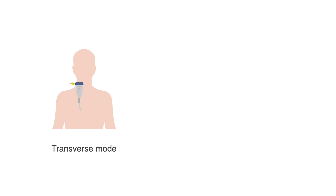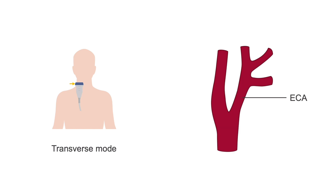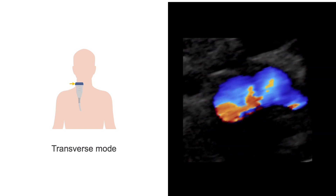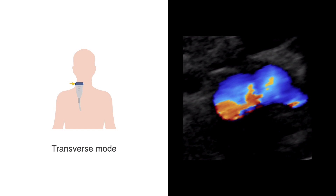To help identify these arteries, first look at the right side of the patient's neck, keep the probe in transverse, and try to locate the ECA. One key difference between the ECA and ICA is that the ECA has branches, whereas the ICA doesn't. The colour flow can be used to help identify the branches of the ECA.